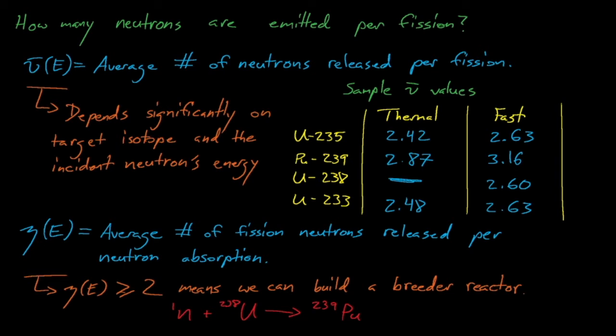If a reactor's eta value is above 2, then in theory we can use one neutron from each fission event to continue the fission chain reaction, and then use the other neutron to create a new fissile isotope to replace the nuclide that just fissioned. By doing this, we can produce as much, or even more, fissile fuel than we consume in this reactor. This kind of reactor concept is known as a breeder reactor.